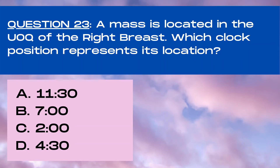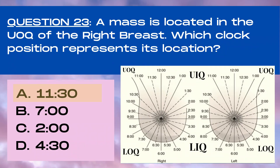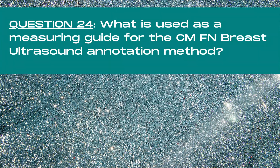Question 23. A mass is located in the upper outer quadrant of the right breast. Which clock position represents its location? A 11:30, B 7 o'clock, C 2 o'clock, or D 4:30? The answer is A, 11:30. The upper outer quadrant of the right breast is the superior lateral section of the right breast and has clock positions ranging from 9 o'clock to 12 o'clock.